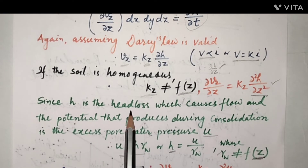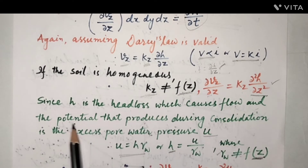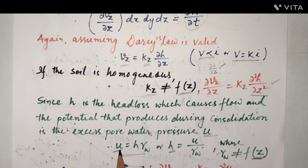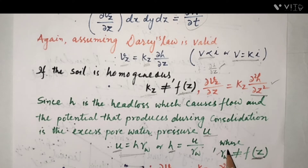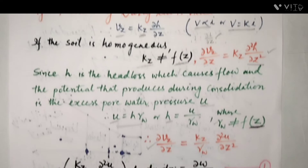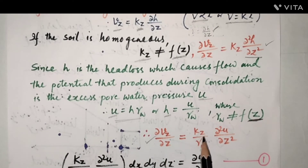Since H is the head loss causing flow, and the potential produced during consolidation is the excess pore water pressure U, pore water pressure U = H · γw, or H = U/γw. Since γw (unit weight of water) is not a function of z, this equation reduces to: ∂Vz/∂z = (kz/γw) · ∂²U/∂z².